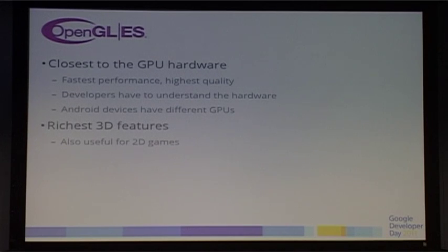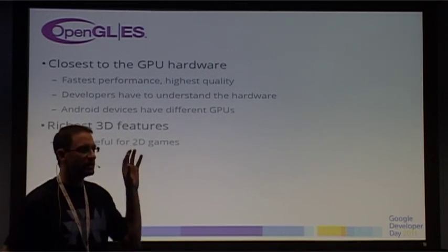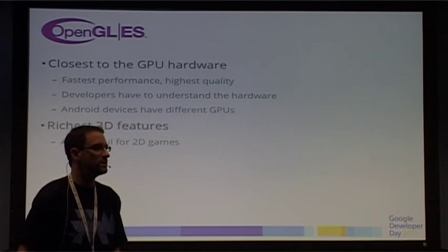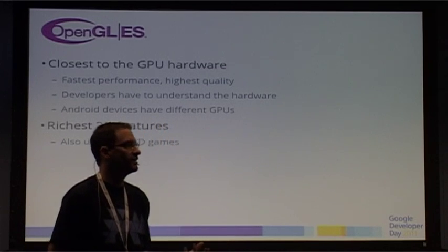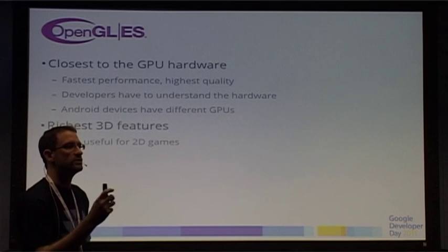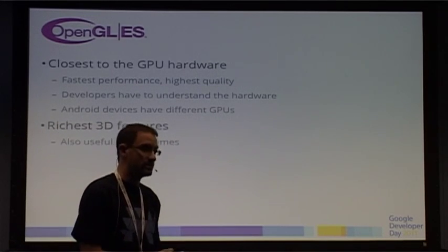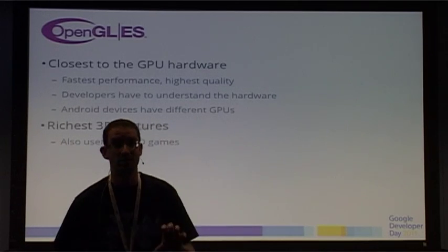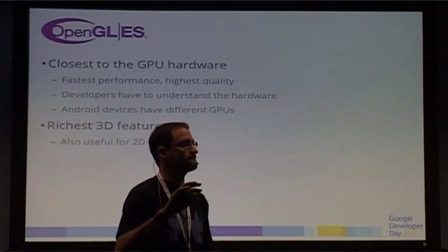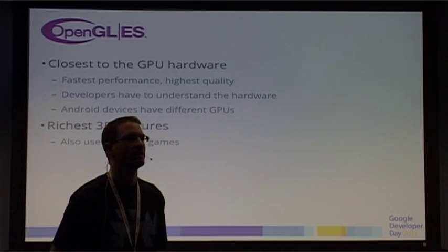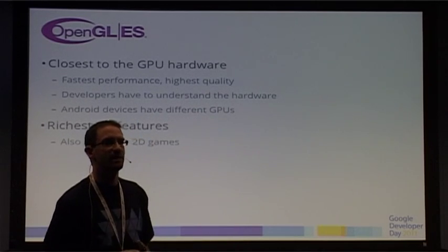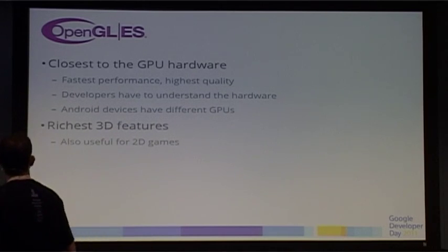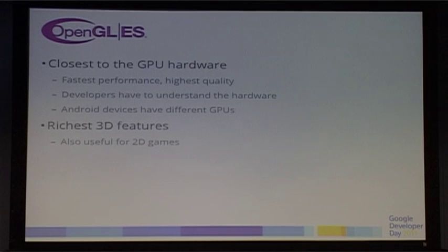OpenGL is closest to the GPU hardware — the fastest performance. You have to understand the hardware and the different GPUs on Android devices. It can be used for 2D games. Different GPUs — Snapdragon, Qualcomm, NVIDIA — use different texture compression formats and have slightly different function sets. Using the multiple APK feature in Android Market, if the only difference is texture compression formats, you can create the same application with graphics compressed in two different formats. Users don't have to download both sets — 30 or 40 megabytes — and Android Market will deliver the correct APK to the correct user. As a developer, you have to understand what you're getting into when using OpenGL.